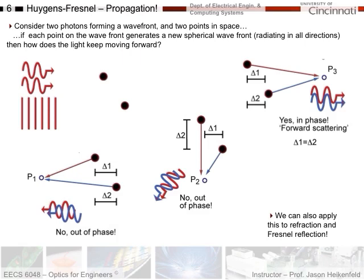The only case that works is forward propagation. The first photon emits forward to P3, and the second photon had a phase shift of delta-2 to reach its re-radiation point. But notice the first photon had to travel that exact same distance to catch up — so the phase shifts are identical, and in forward propagation they will be in phase. Some people call this 'forward scattering' — the light could scatter in any direction, but it only scatters forward because of these interference principles.